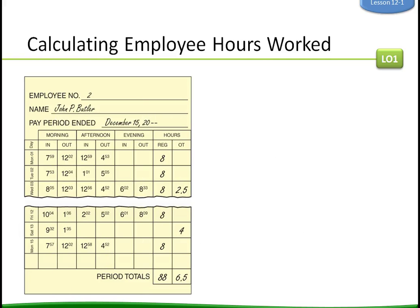Here is an example of a time sheet. The employee came in at 7:59, out at 12:02, took lunch, back at 12:59, out at 4:53. That's eight to twelve — four hours before lunch — then one to five, about four hours after lunch, giving you a regular eight-hour day. Another day shows eight to twelve (four hours), one to five (four hours), and then a break followed by two and a half more hours of overtime.